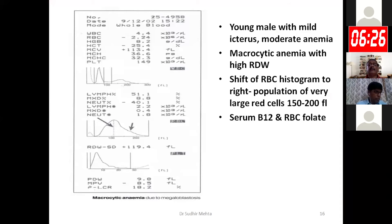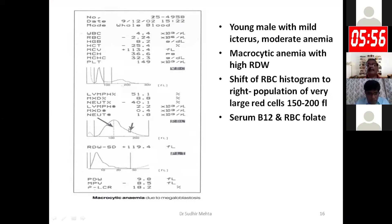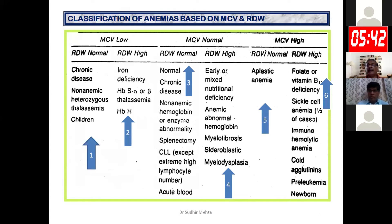This is a CBC report of a young male with mild icterus and moderate anemia — hemoglobin 8.2. MCV is quite high at 113, and RDW-SD is 119.4. The whole histogram has shifted to the right, with a large population of RBCs in the range of 150 to 200 femtolitres, with a mean MCV of that subpopulation around 170. This fits into the high MCV, high RDW classification. The commonest cause is megaloblastic anemia due to folate or B12 deficiency; other causes include sickle cell disease, hemolytic anemia, or cold agglutinin disease.